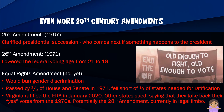The 25th Amendment clarified presidential succession — what happens if something happens to the president. It also provides a way for the cabinet and vice president to come together and say the president is unable to perform their duties. That has never happened, but it's there if needed. The 26th Amendment lowered the voting age from 21 to 18. During the Vietnam War, young men were being drafted but couldn't vote. The argument was: old enough to fight, old enough to vote. Not surprisingly, the draft ended pretty soon after that.